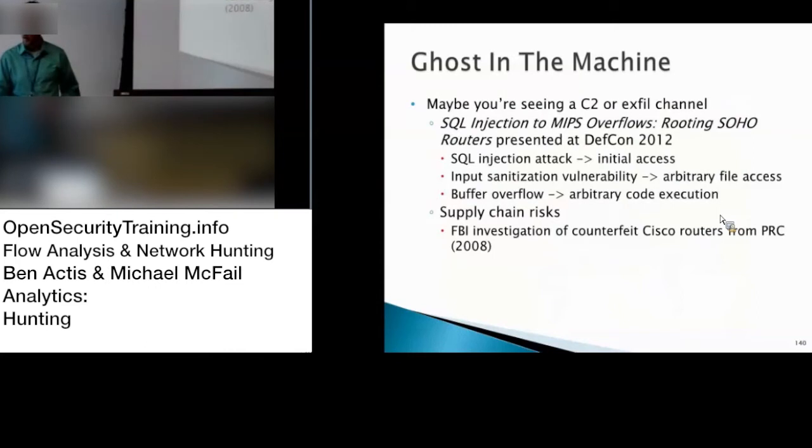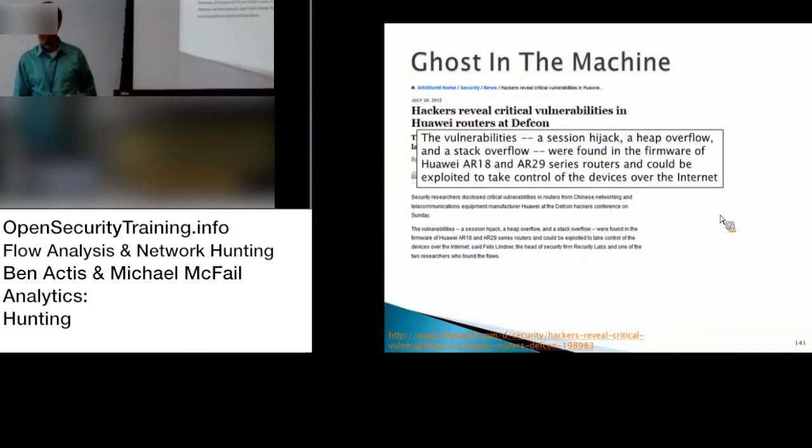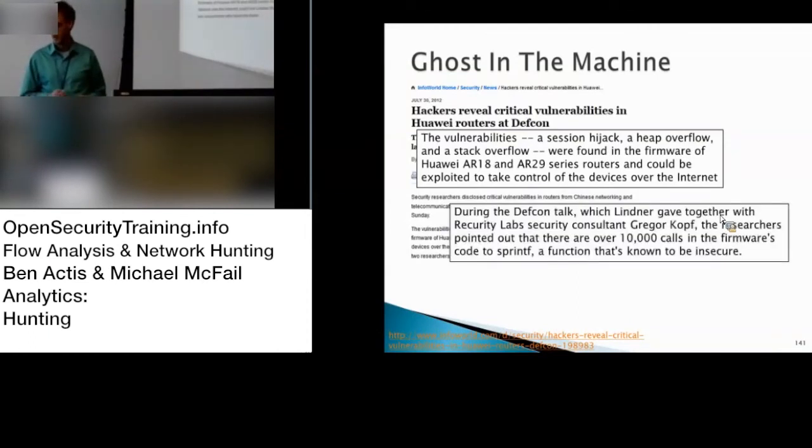And beyond just remotely owning Netgear routers, there are supply chain risks. So the FBI did an investigation in 2008 of counterfeit Cisco routers in China. So there's some supply chain issues there. And there are a lot of vulnerabilities in the Huawei routers. It's a large Chinese manufacturer. Huawei routers. All right. So session hijacking vulnerabilities. People have buffer overflow vulnerabilities, stack overflow vulnerabilities. And lots of calls during insecure code. So the point was these routers, the firmware was not built properly. And routers were pretty darn vulnerable. I don't think it's unique to this particular brand.